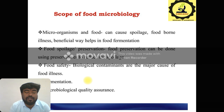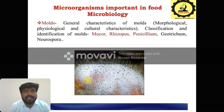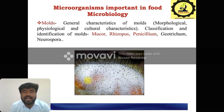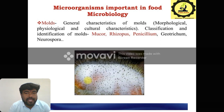Quality assurance is important overall in food microbiology. What are the important microorganisms in food microbiology? Different microbes you can use in the food production process, especially the molds. The molds have general characters and morphological characters or cultural characters important for isolation of molds. For example, Rhizopus, Penicillium and Geotrichum, Neurospora. These are the important molds used in our food sector.